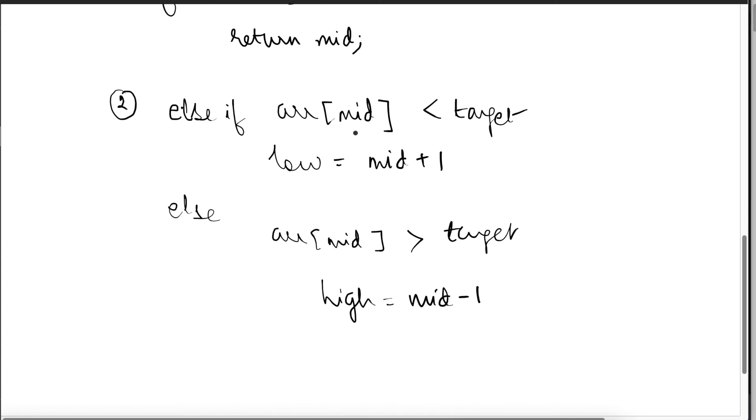Simple thing, whenever it is lesser than the target, the array of mid means the current mid element. If it is lesser than the target, make the low pointer move forward in order to find the element. Or if it is greater, then you have to make the high pointer come towards the lower side. So this low in this case is going towards the higher side. And in this case, the high is coming towards the lower side. This is how you can visualize.